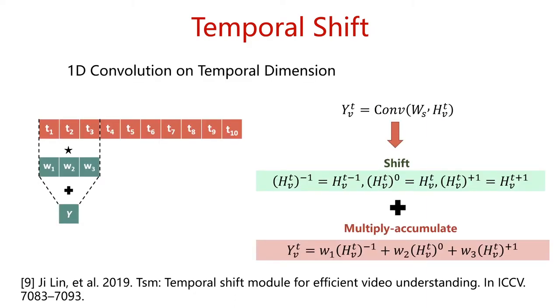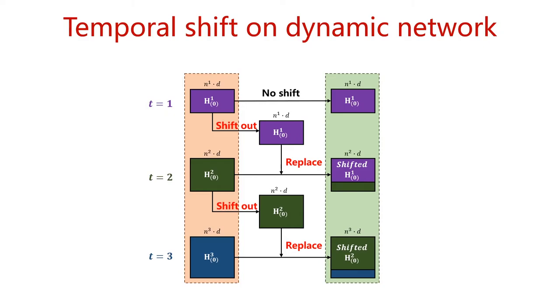Following the research of TSM, one-dimensional convolution on temporal dimension can be divided into shift operation and multiplication accumulation operation. The shift operation does not require numerical operations. We can easily define the shift operation on the dynamic network embedding. Because most dynamic networks are more focused on capturing features from historical moments, the shift operation only shifts the node embedding in the previous moment to the next moment.